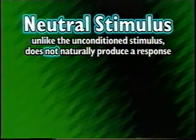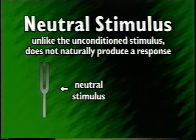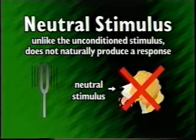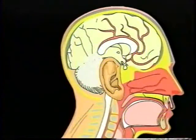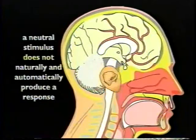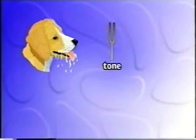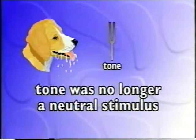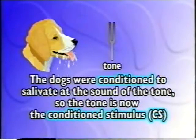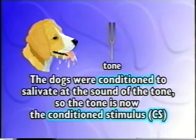A Neutral Stimulus is one that, unlike the Unconditioned Stimulus, does not naturally produce a response. In Pavlov's experiments, the Neutral Stimulus was the tone. Until the dogs learned to associate the tone with the meat, it did not produce any response in them at all. A Neutral Stimulus does not naturally and automatically produce a response. Once the dogs paired the sound of the tone with the meat and started to salivate just at the sound of the tone, the tone was no longer a neutral stimulus — the dogs were conditioned to salivate at the sound of the tone, so the tone is now the Conditioned Stimulus, or CS.